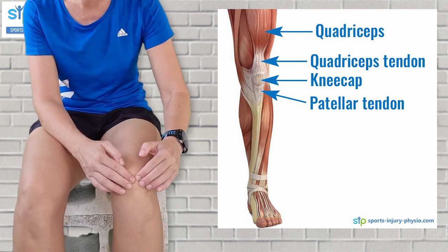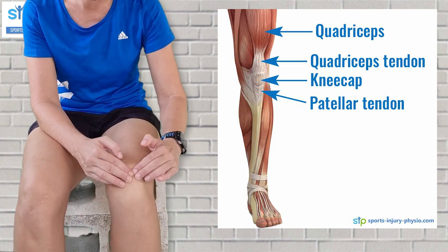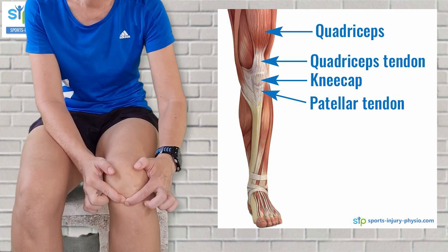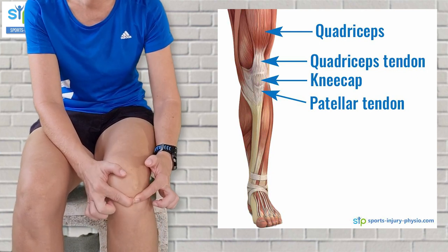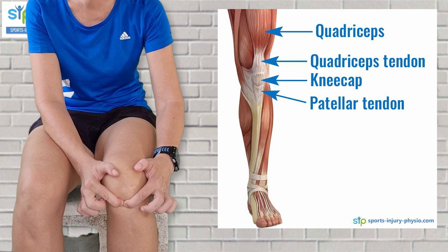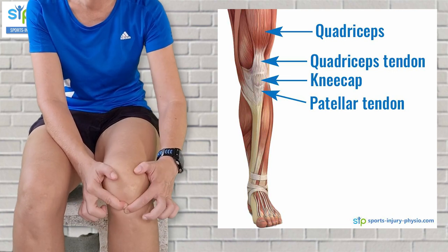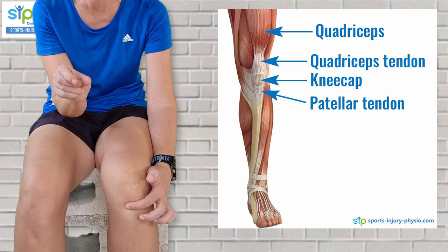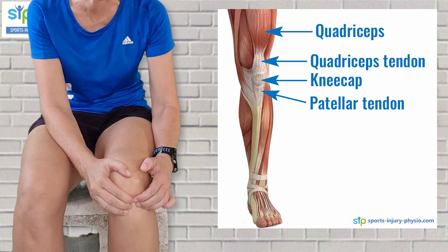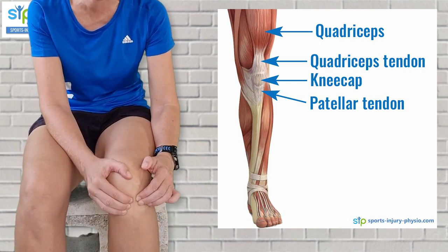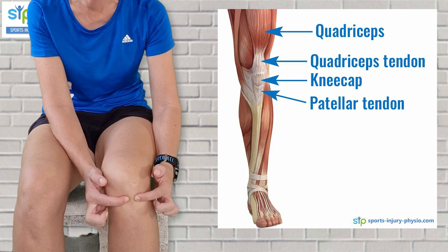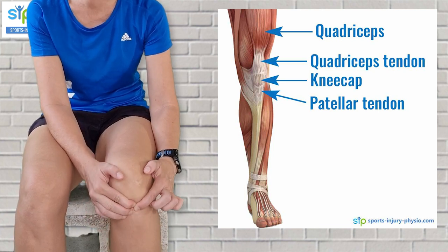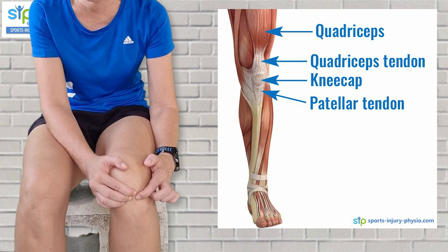If you go to the kneecap and come down and find the bottom tip of it and go side to side, you'll find a cylindrical thing that's quite hard, and as you go down you can feel it all the way down — that's your thick patella tendon. If you have pain along the patella tendon, often where it attaches to the kneecap, that usually indicates patella tendinopathy.